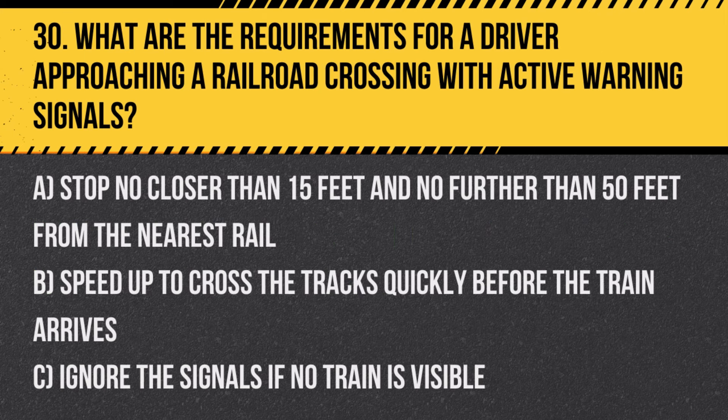Question 30: What are the requirements for a driver approaching a railroad crossing with active warning signals? A. Stop no closer than 15 feet and no further than 50 feet from the nearest rail. B. Speed up to cross the tracks quickly before the train arrives. C. Ignore the signals if no train is visible. Answer: A. Stop no closer than 15 feet and no further than 50 feet from the nearest rail. This safety measure ensures that the vehicle remains a safe distance from the tracks.